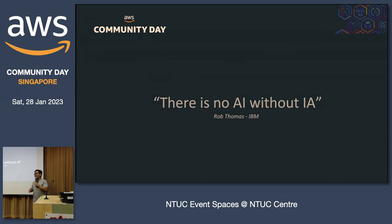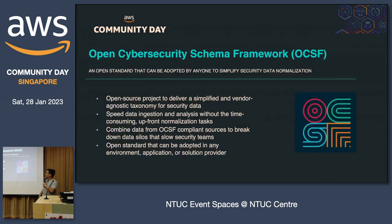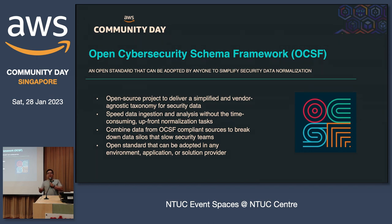There's no AI without IA — no AI without information architecture. You cannot build AI models and security tools unless you have proper data. So the industry came up with OCSF — the Open Cybersecurity Schema Framework. It basically tells the industry: please dump your stuff in a specific format. Let's create a standard that everybody will follow so any tool can analyze and ingest data properly. It's open source and is backed by AWS, Splunk, and many others.